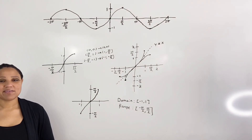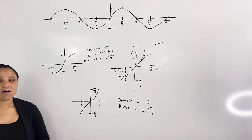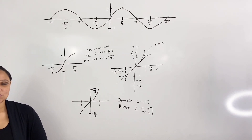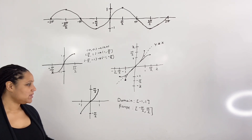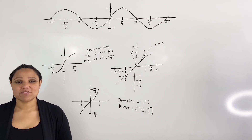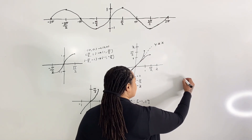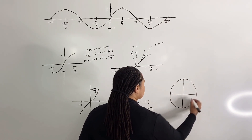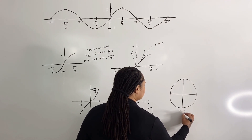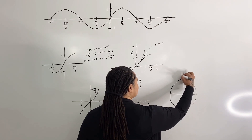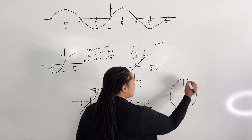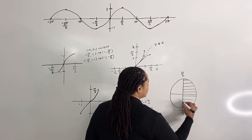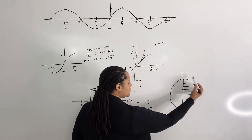Basically what this means: if you have a function in the form y equals inverse sine of x, your x values must fall within the domain, and your y values must fall within the range. If you observe this on the unit circle, the unit circle has negative pi over two at the bottom and pi over two at the top, and your y values must come from the right side of the unit circle, because our range is from negative pi over two to pi over two.